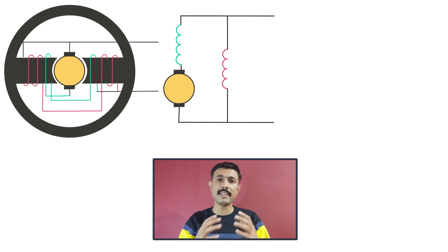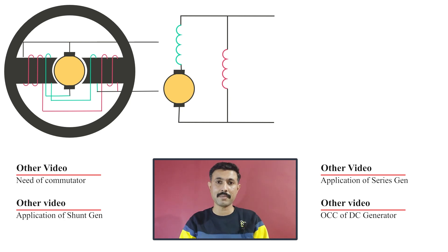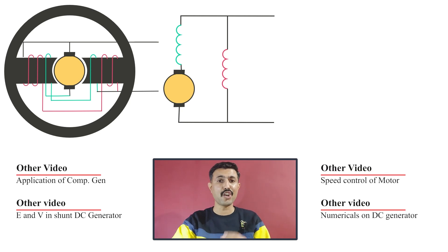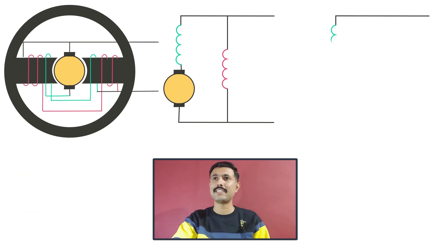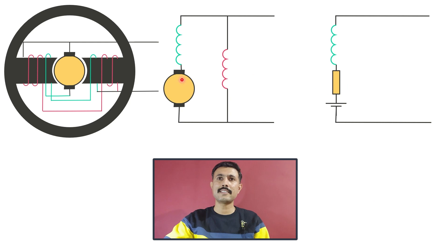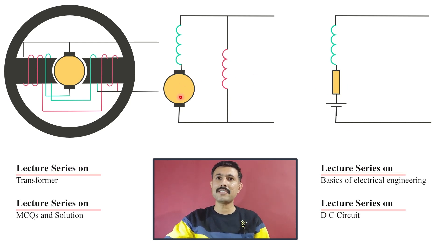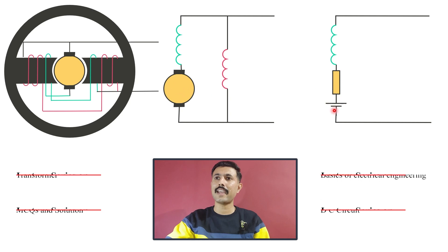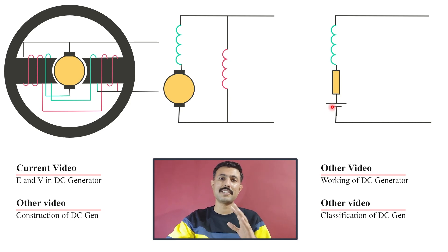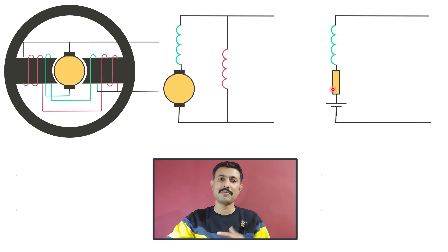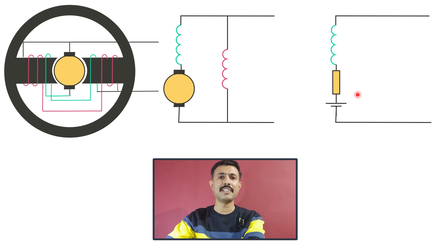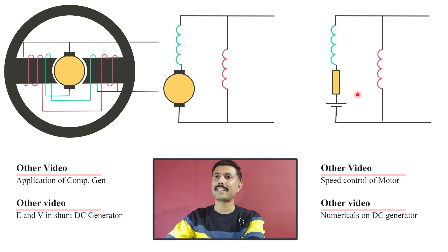Now we want to develop the relation between terminal voltage and induced EMF, so we will derive the equivalent circuit of a long shunt DC generator. In this circuit, the armature section is represented by one resistance and a DC source. This DC source represents the induced EMF, and the resistance represents the armature winding resistance. The shunt section of the field winding is connected in parallel.